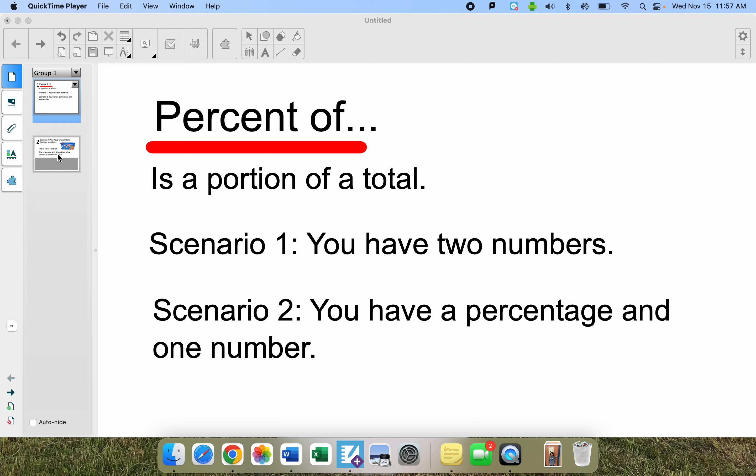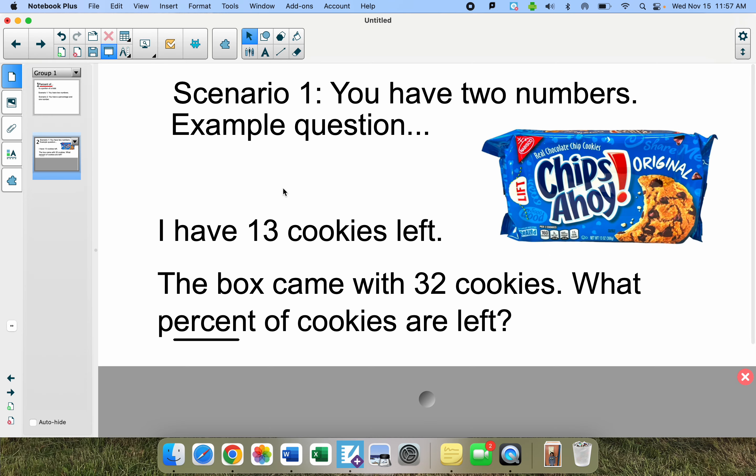Let's take a look at an example. Scenario one, this is an example if you have two numbers and this is true, I just went to my cupboard and saw that my daughters had been eating all the cookies. I only have 13 cookies left. The box came with 32 cookies. What percentage of cookies are left?